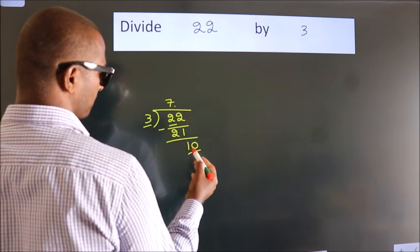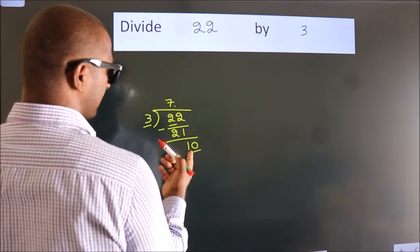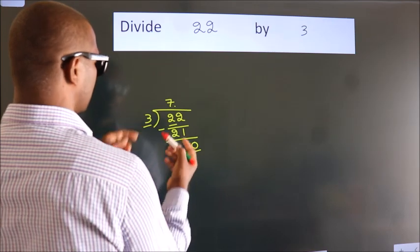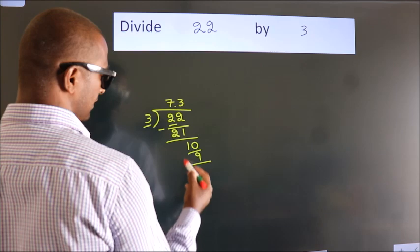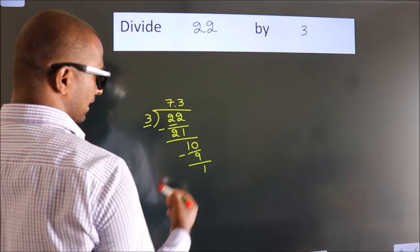So, 10. A number close to 10 in the 3 table is 3 times 3 equals 9. Now we subtract. We get 1.